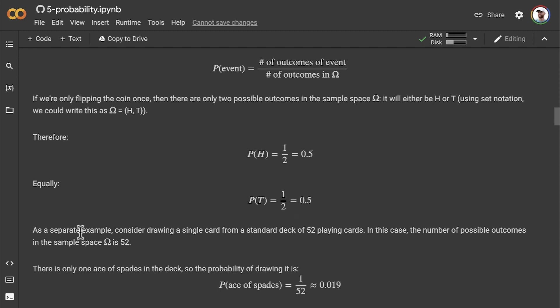As a second separate example, consider drawing a single card from a standard deck of 52 playing cards. In this case, the number of possible outcomes in the sample space omega becomes 52. There's only one ace of spades in the deck, so the probability of drawing the ace of spades is 1 in 52, or about a probability of 0.02 or 2%.